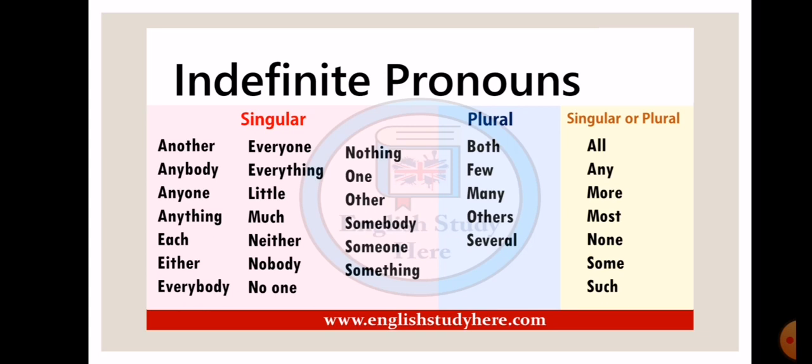For example, let me give you an example of some as singular as well as plural. If I use some as singular, I can say some of the salad has been eaten. Remember, I am saying has for singular. If I want to use it as plural, I can say some of us have never ridden bicycle before. Here I am saying some of us have, which means I am using it as a plural.